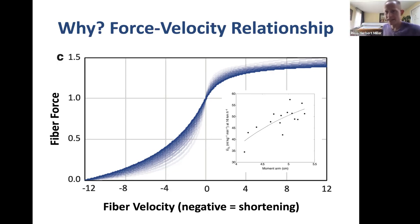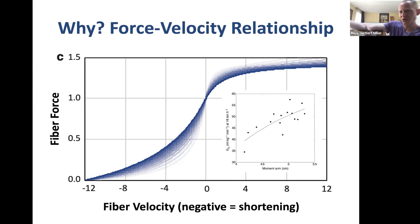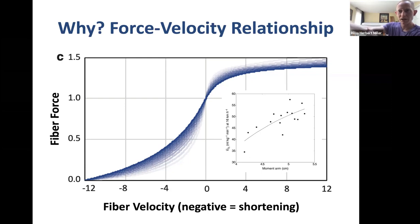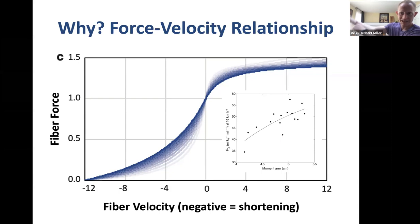To visualize this: imagine a biceps muscle inserting close to the elbow joint. As I flex my joint, the insertion point moves a small distance at a slow speed. Now imagine that same biceps inserting much further down, near the wrist. Doing that same motion, the insertion point moves much further and much faster — the muscle must shorten at a much greater speed for the same joint motion.